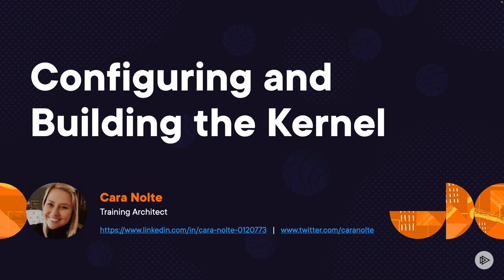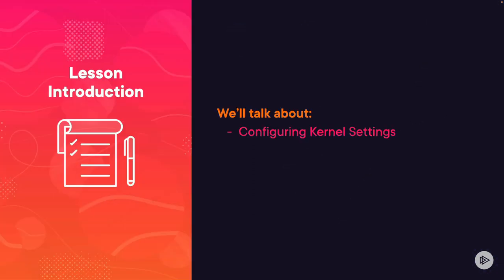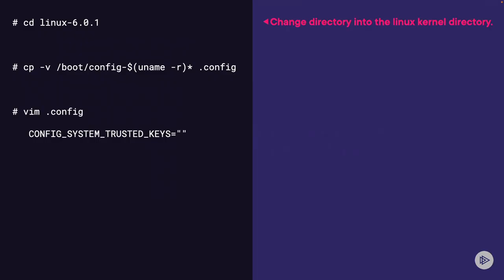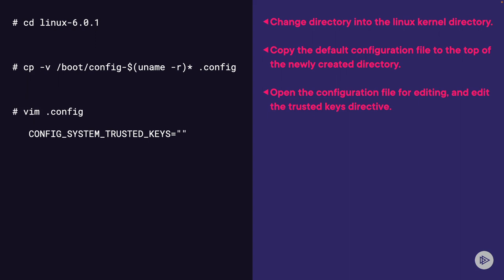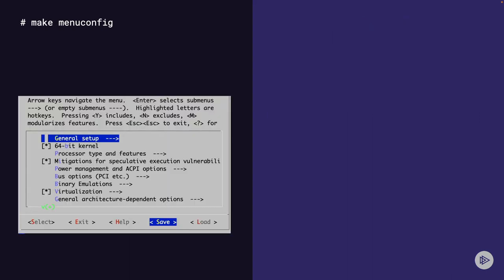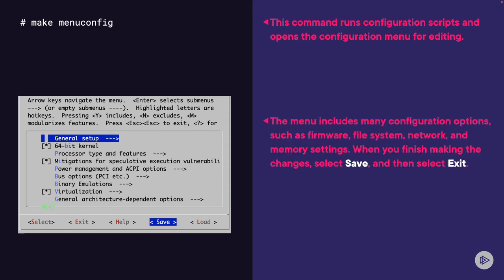In this lesson, Configuring and Building the Kernel, we'll talk about configuring kernel settings as well as compiling the kernel. First, we're going to change directory into the Linux kernel directory, then copy the default configuration file into that directory. Next, we'll open the configuration file for editing and edit the directive config_system_trusted_keys. Then we're going to run the make menuconfig command, which runs configuration scripts and opens a menu for configuration settings.